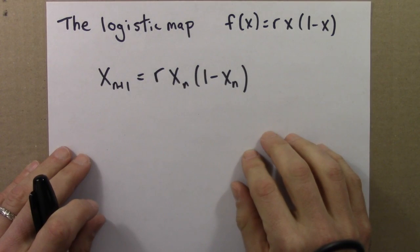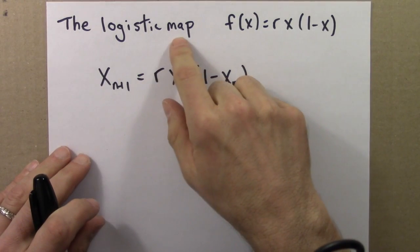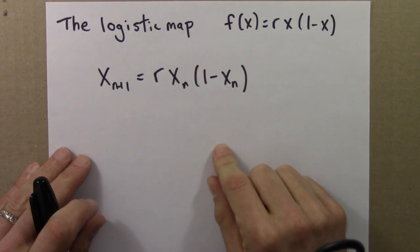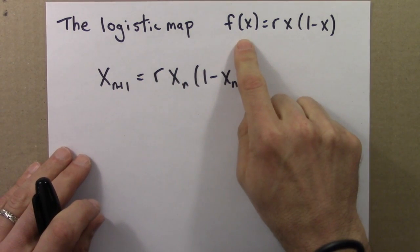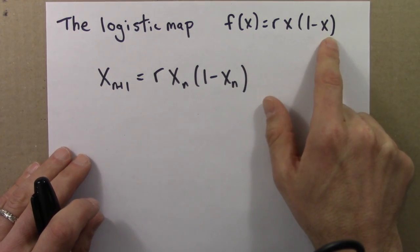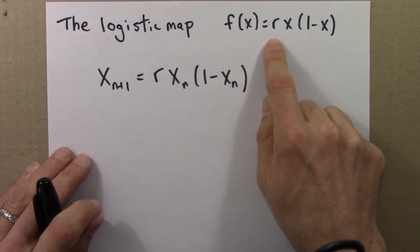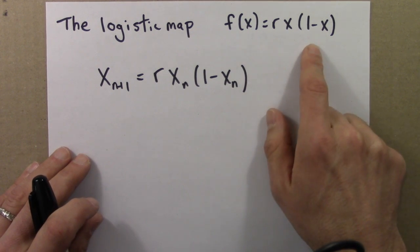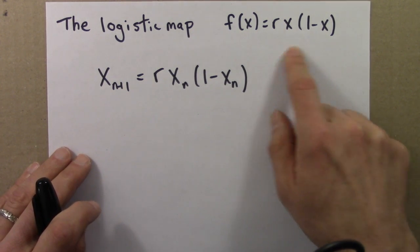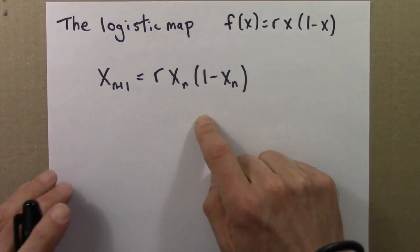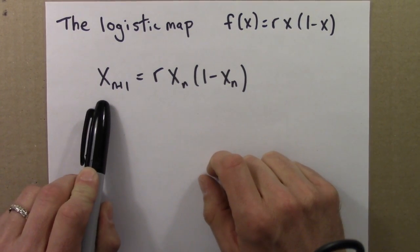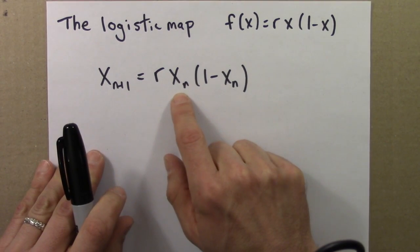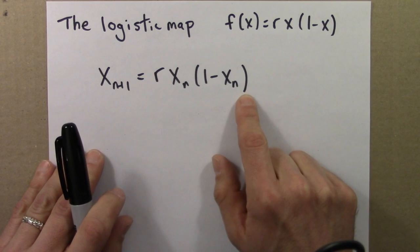So here's the logistic equation, or I'll call it now the logistic map, to distinguish it from the logistic differential equation. So this is an iterated function. Here's the function, r times x times (1-x). r is a parameter going from 0 to 4 that will vary. And we'll iterate the function to produce a time series. We can also write that process this way. This says that the next value of x is a function of the current value of x. r times the current value times 1 minus the current value.